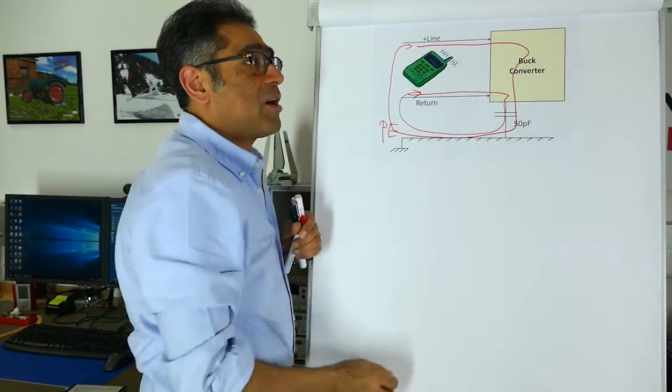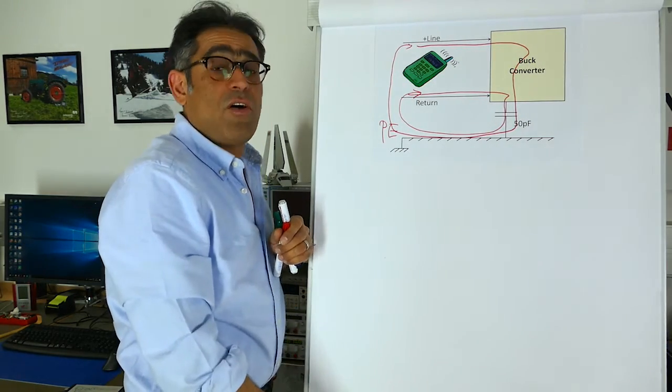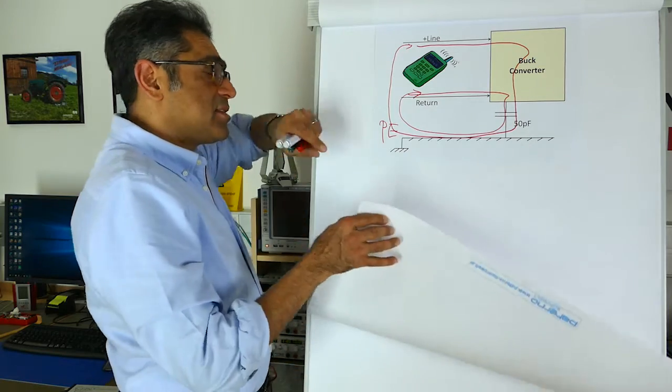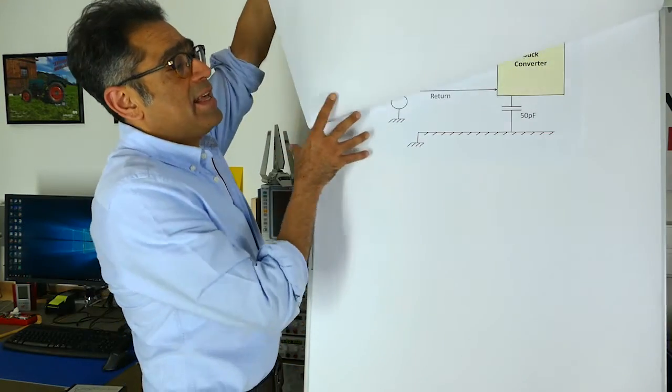In reality, inside of the buck converter you have got a switch. The switch is turning on and off at a very high rate, so you've got a high dv/dt and high di/dt.